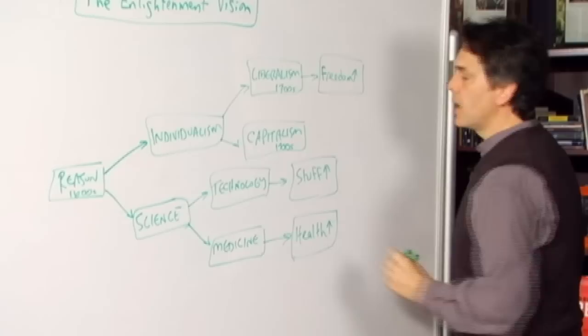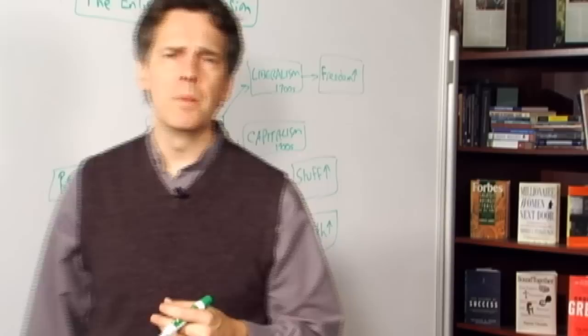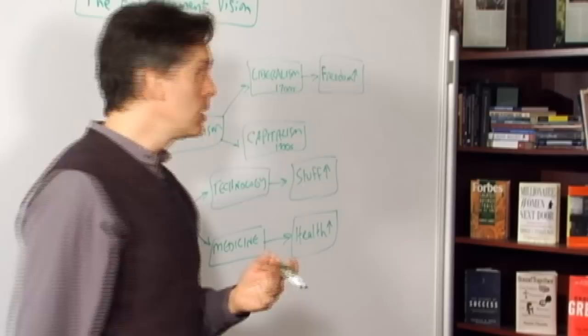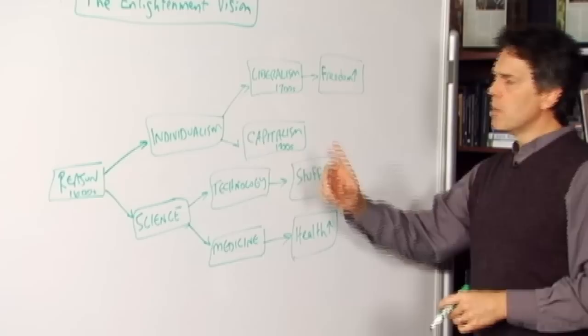And so by the time we get to the late 1700s, we find capitalistic free market institutions coming to dominate the world. Just as in 1776, the American Revolution was primarily a political revolution, certainly had a number of economic implications as well.